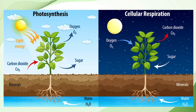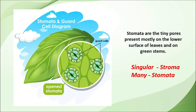During daytime, plants take in carbon dioxide to perform photosynthesis and release oxygen through the stomata. At night, plants take in oxygen and release carbon dioxide into the air through stomata, which is called cellular respiration in the plant. Gaseous exchange takes place through stomata. Stomata are the tiny pores present mostly on the lower side of the leaves and on green stems. Plural is stomata; singular is stoma.